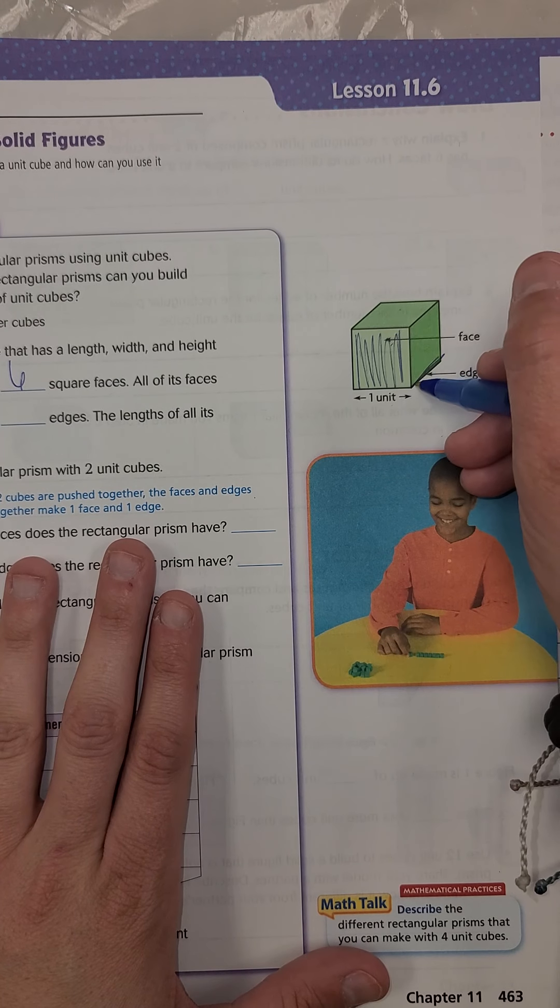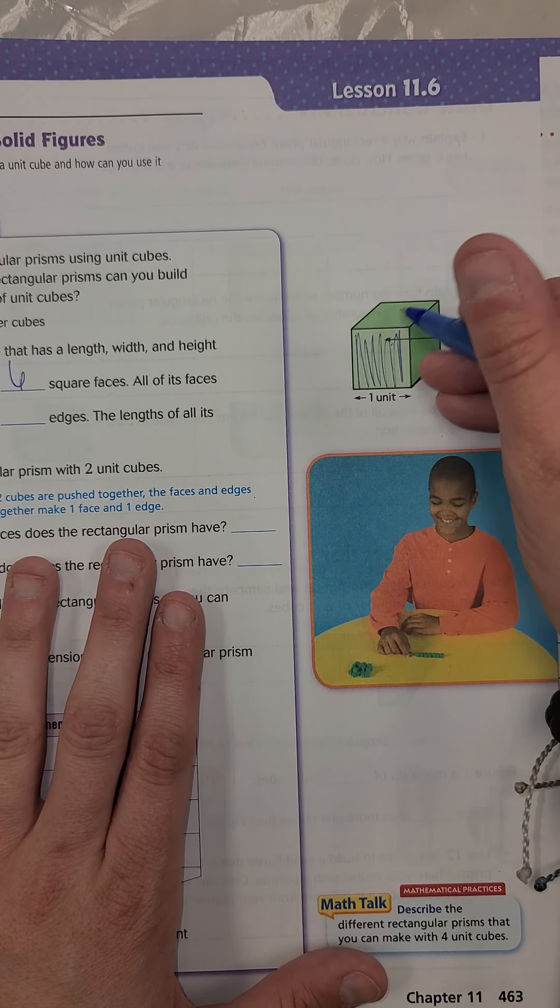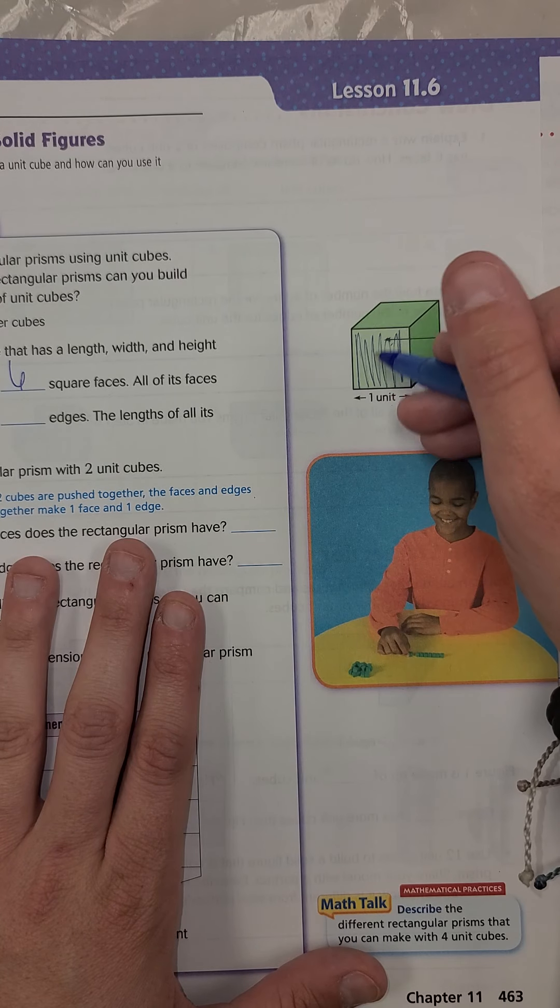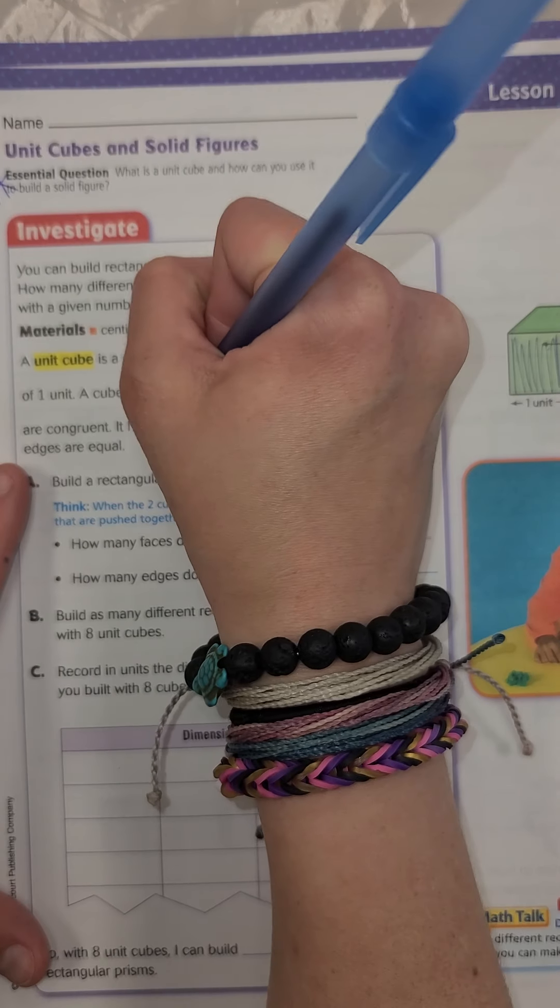It has how many edges? So remember if we go over here to the edges, it has one, two, three, four, five, six, seven, eight, nine, 10, 11, 12. So it would have 12 edges.